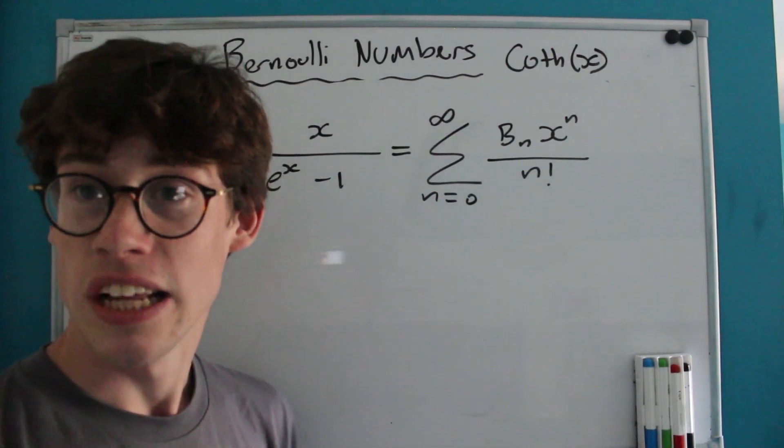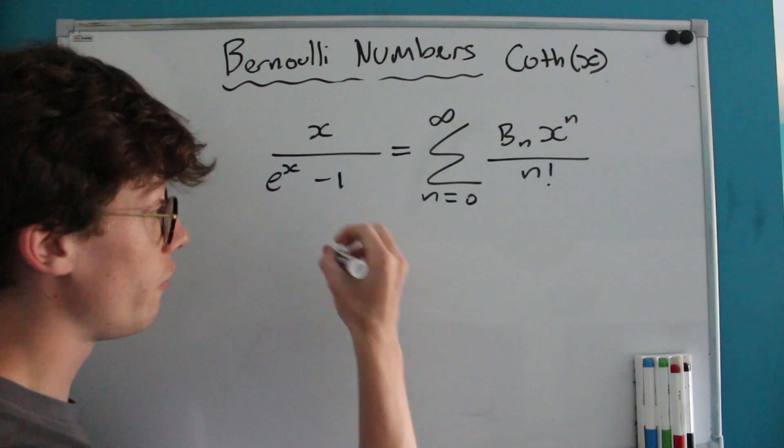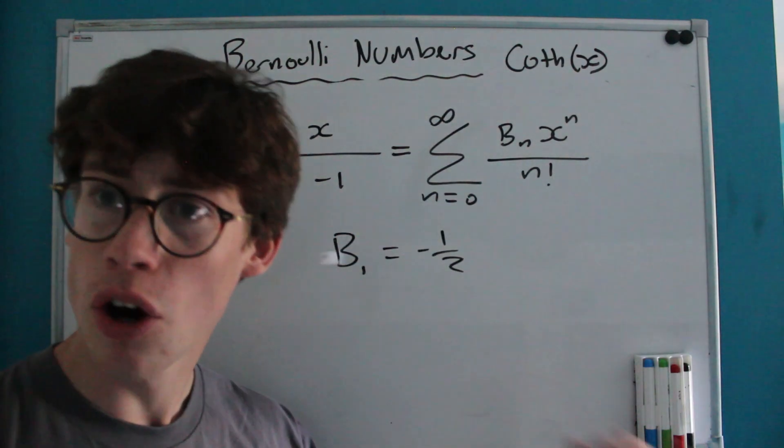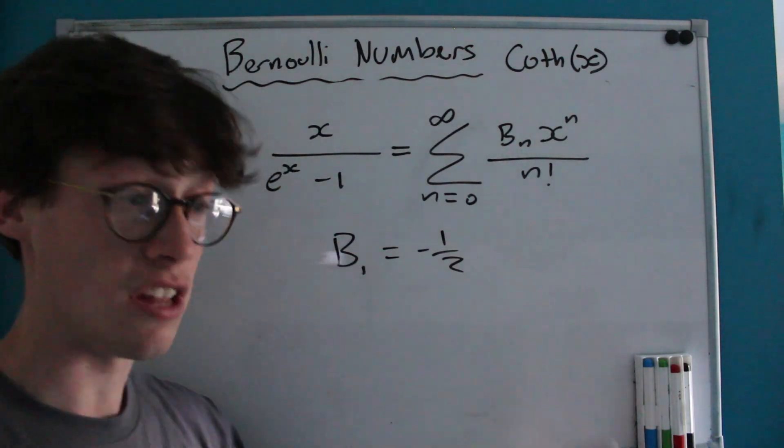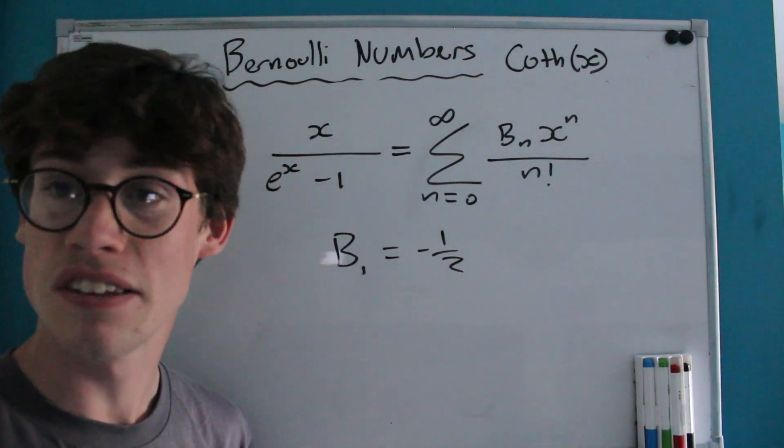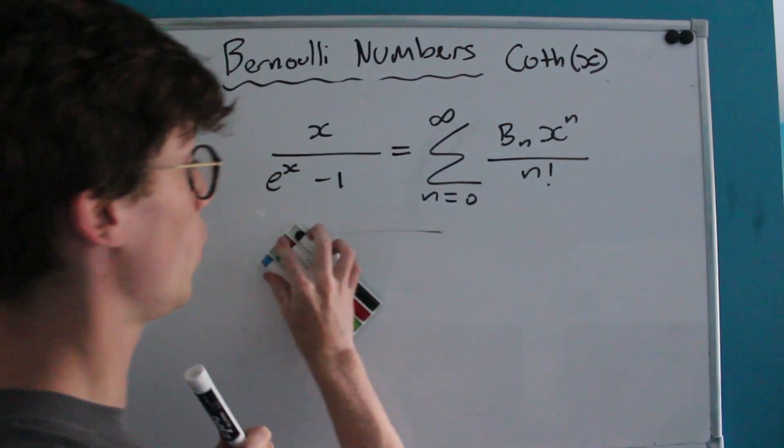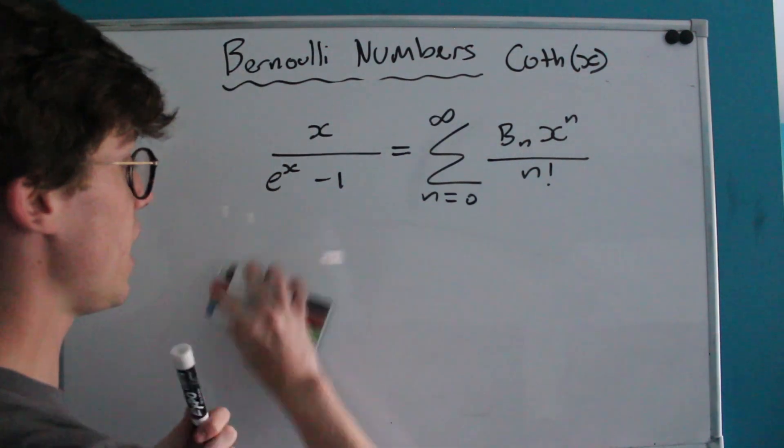At the end of the last video, I left it as a challenge to prove that after the first odd Bernoulli number, which is equal to negative a half, all of the other odd Bernoulli numbers—b_3, b_5, b_7, etc.—are all equal to 0.